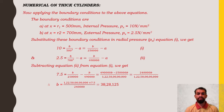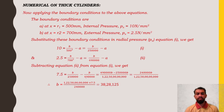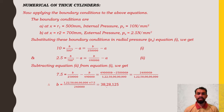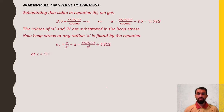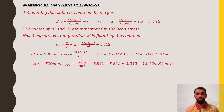The second condition gives: 2.5 = B/700² − A, which is equation 2. Subtracting equation 2 from equation 1: 7.5 = B/250,000 − B/490,000. Taking the LCM and simplifying, we get B = 38,28,125. Substituting this value of B back into equation 2, we get A = 5.312.